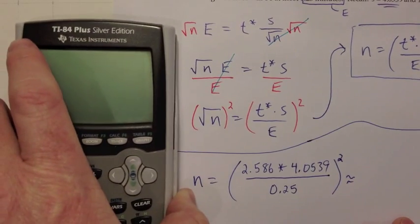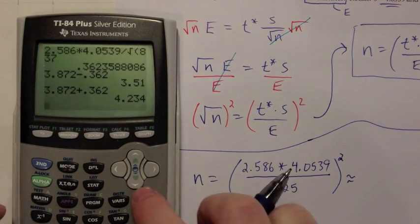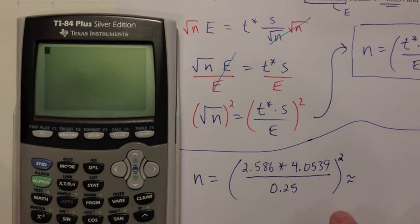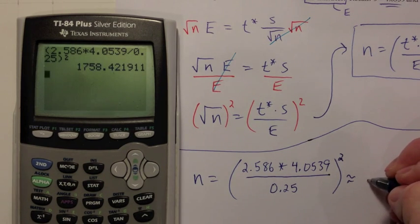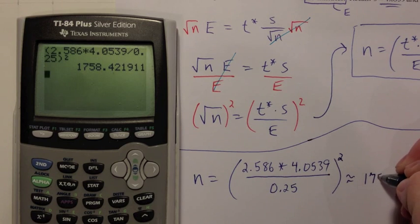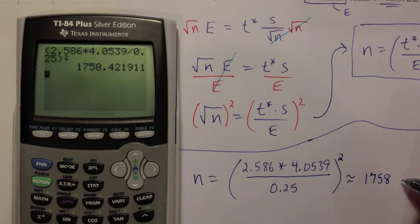Go ahead and slide all this over and bring in the calculator. All of this goes in parentheses and then square on the outside. So 2.586 times 4.0539, don't end the parentheses yet, divided by 0.25. Now all of that is in parentheses, so I end it and I can square and all of that will get squared. So I get 1,758.42.